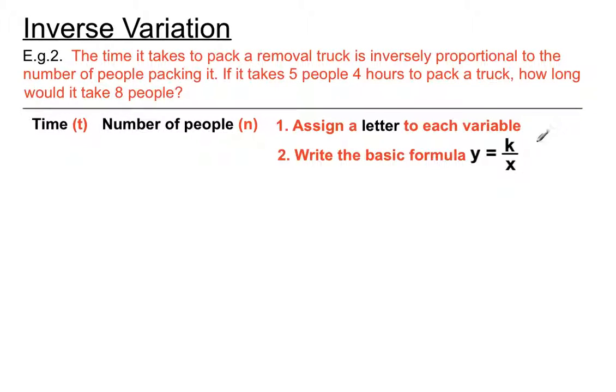We have a basic formula of Y equals k on X, but we have a decision. We could have T equals k over N, or N equals k over T. We are guided by the question to figure out whether our final answer will be time or number of people. The question asks how long would it take, so I'm trying to find time in the end. I want that to be the subject of the formula. So I'm going to write T equals k over N.